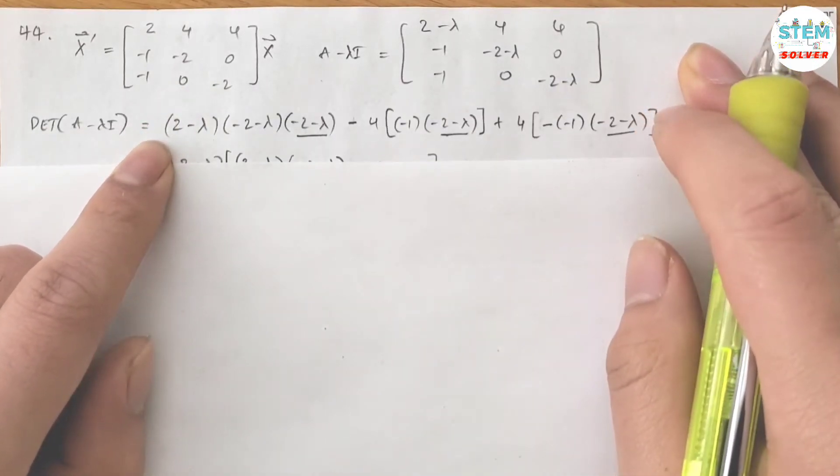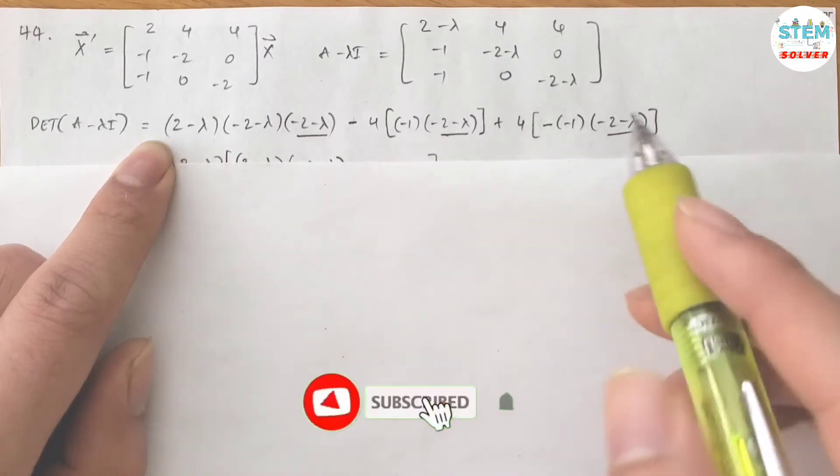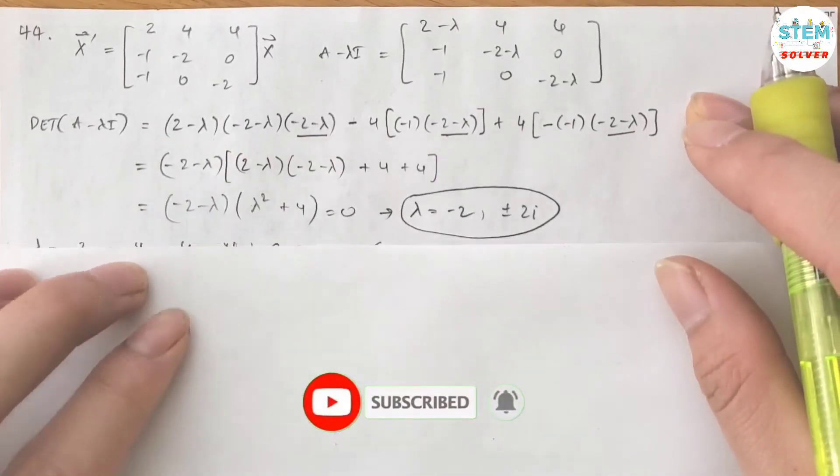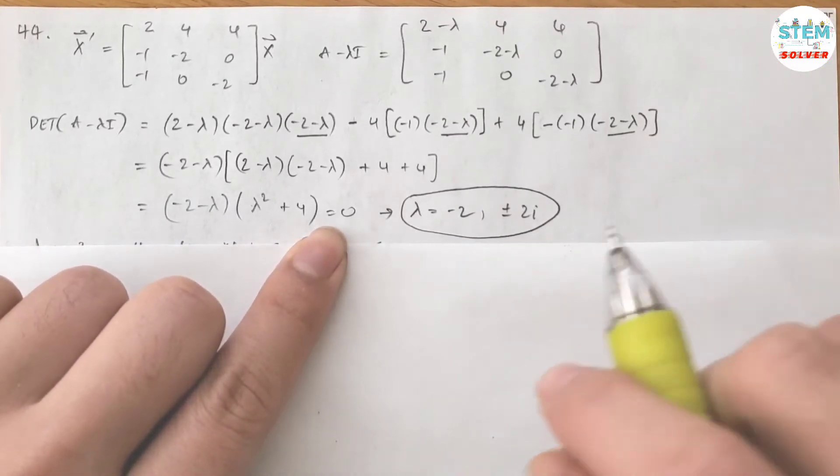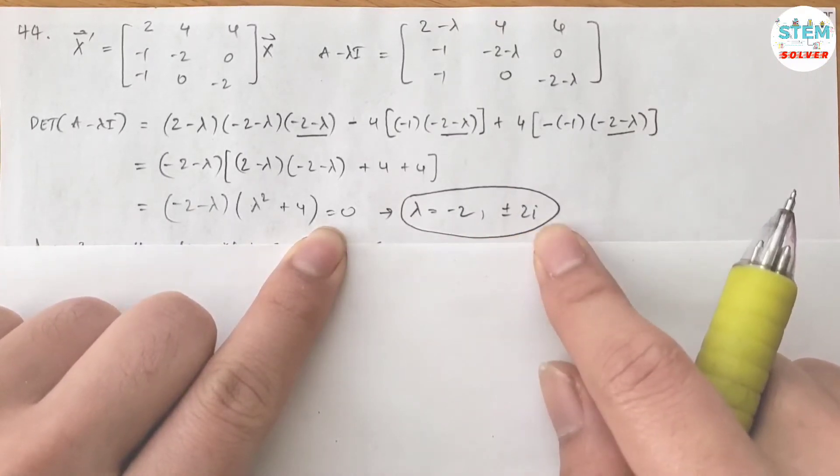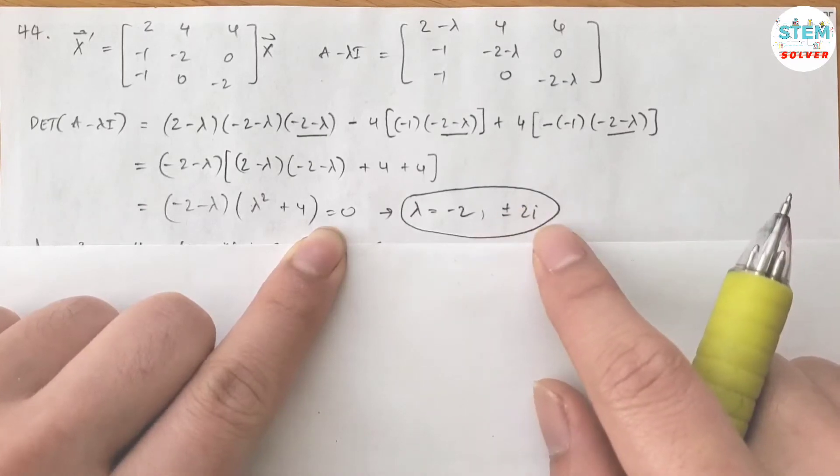And then you are going to find its determinant, which gives you this. So this will be simplified and then set equal to 0. So for lambda, I will get lambda equals negative 2 and lambda equals negative 2i, distinct complex eigenvalues.